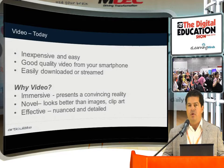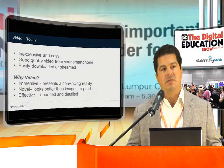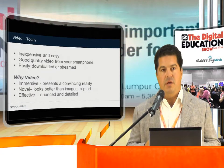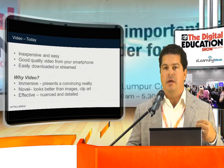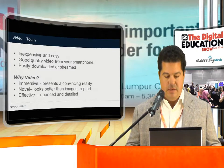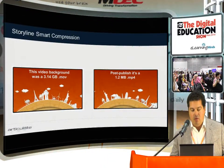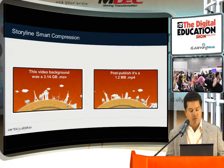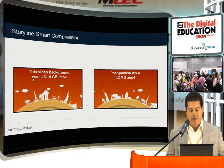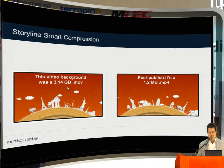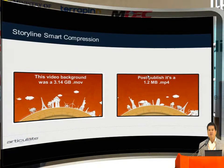The nuances that a video exposes — let's say in a particular process, maybe an assembly process, or in the case of learning, something with hands-on lab work — a video can provide way more detail and nuance than text and pictures ever could. One more point about compression: we've spent a lot of time at Articulate thinking about compression. This original file here, a video background used in a course by one of our customers, was 3.14 gigabytes. Once published with Storyline it became 1.2 megabytes with very little loss of fidelity. So you're not sacrificing quality anymore when incorporating video into your courses.